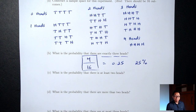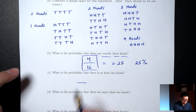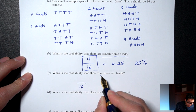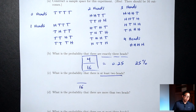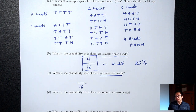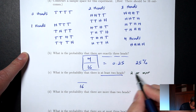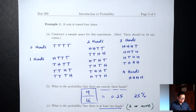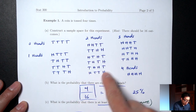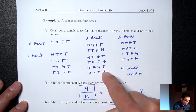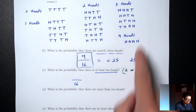Part C: what's the probability that there are at least two heads? Bottom is still 16. 'At least two' means two or more — just like 'at least 21 to purchase alcohol' means 21 or over. So at least two means two or more heads. That includes all outcomes with two, three, or four heads: 6 + 4 + 1 = 11 outcomes. So the probability is 11/16.